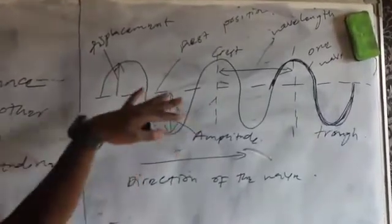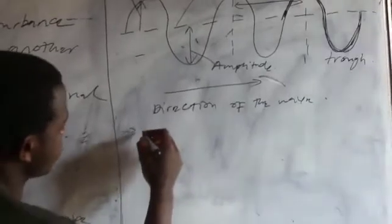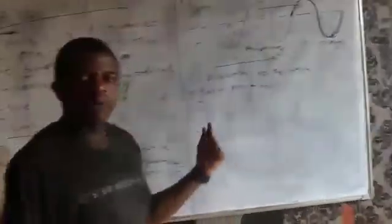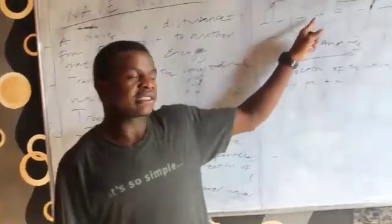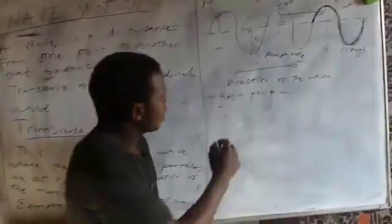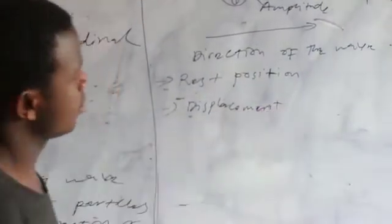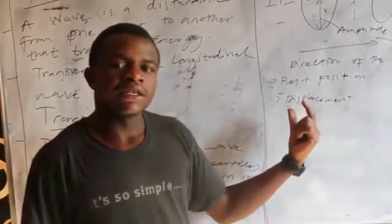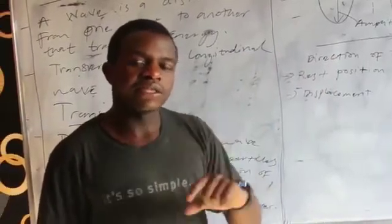Let us look at the definitions of the parts that form the transverse wave. The rest position is the region where there is no vibration of the particles — this line shows that the particles here don't vibrate. The displacement shows the distance and the direction of the particles from the rest position.